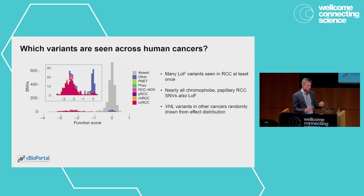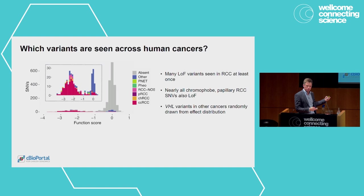Looking at VHL variants in other cancers — ones not yet linked to a germline mutation in VHL — we see just a random distribution reflecting the broader distribution of scores in the assay. There's no enrichment for loss of function whatsoever, consistent with the fact these are passenger mutations, not drivers.